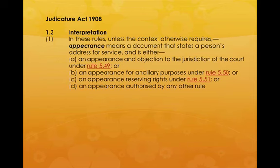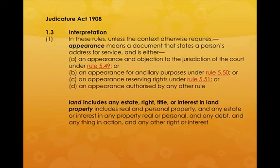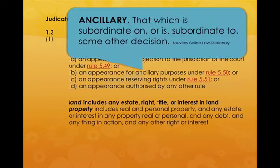Now we'll go to the Judicature Act — these are the screenshots of the interpretation. An 'appearance' means a document that states a person's address for service. It doesn't mean that we have to turn up; it just means an address for service. Under section B, an appearance for ancillary purposes under Rule 5.50 — that's the one we're going to be looking at. Also, 'land' includes any estate, right, title or interest in land. 'Property' includes real and personal property, any estate or interest in any property, real or personal, and any debt and anything in action.